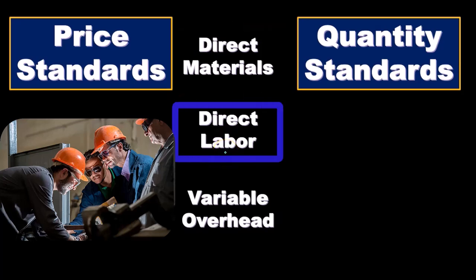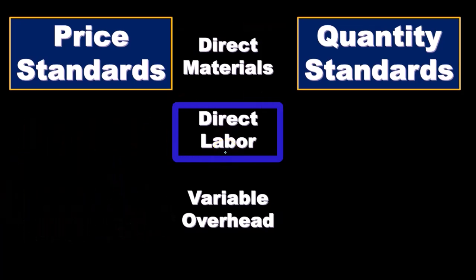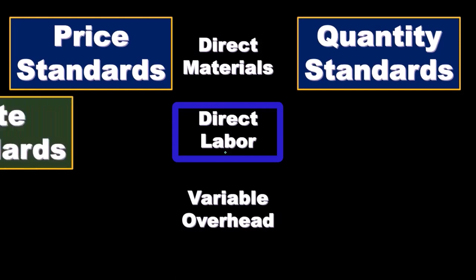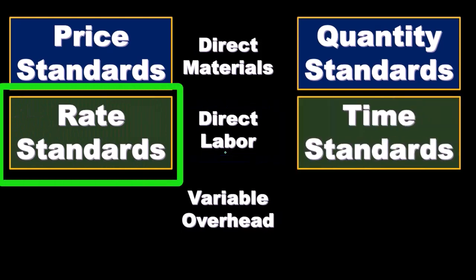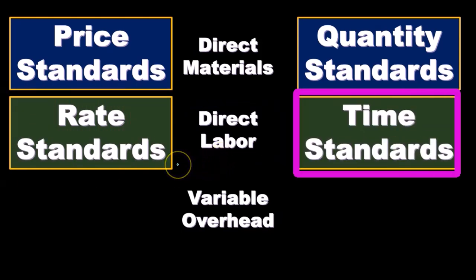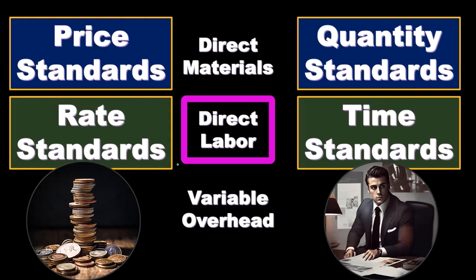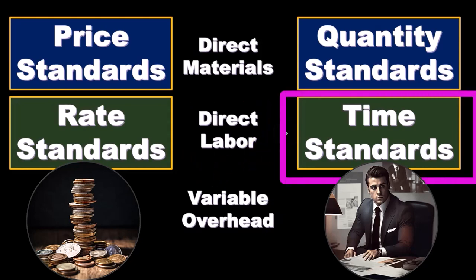We have a similar condition with the direct labor. If we consider the direct labor on the income statement — the budget versus actual — we see that difference, and we want to further break that down into its component parts: the rate standards and the time standards. There's a difference in direct labor expense on the budget versus actual. Is that due to a difference in rates — did we pay people different rates than we had expected? Or was it the time standard — did people work more or less hours than we had budgeted?